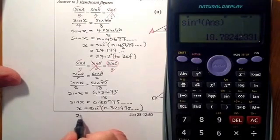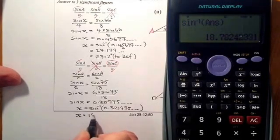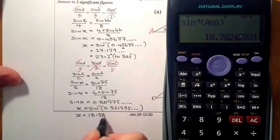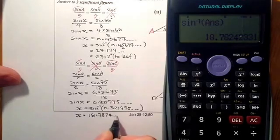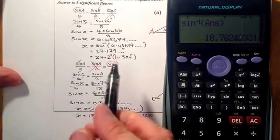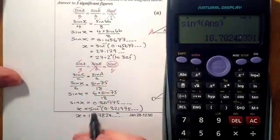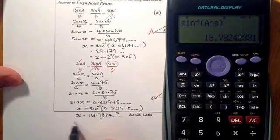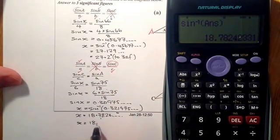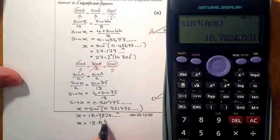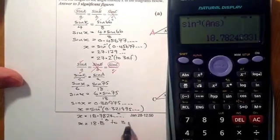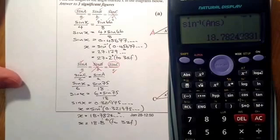So from there, I'm saying that x is equal to 18.7824 degrees. I'm rounding to three significant figures, cutting them there. So that'll give me 18.8 degrees to three significant figures.